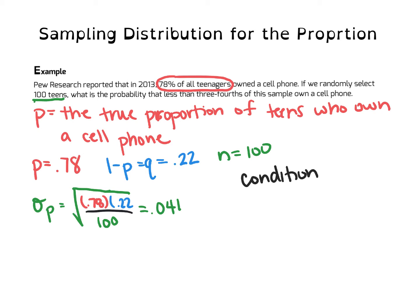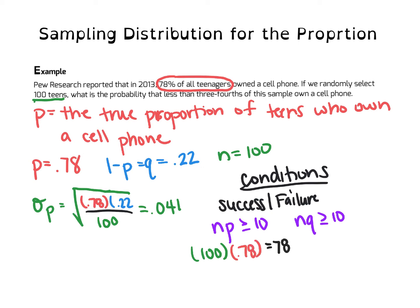The first condition says that we have enough successes and failures to make it look normal. So, the normality check. To do that, we call it the success-failure rule. And remember, to show success-failure, N times P has to be greater than or equal to 10. And N times Q has to be greater than or equal to 10. So, we're going to state that. My N again is 100. My P is 0.78. So, that's equal to 78. And then my Q, 100 times my Q, which is 0.22, that's equal to 22. So, because both of these are bigger than that, the normal condition holds. We can assume normality here for this.